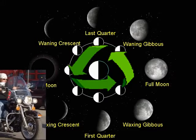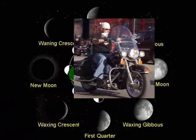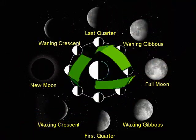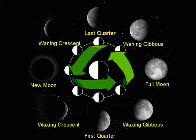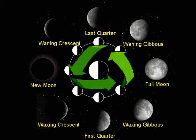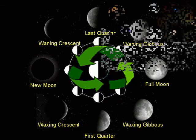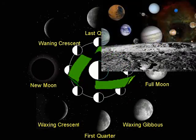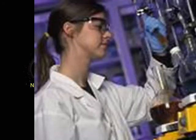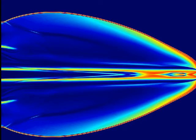Today we're going to study cycles, but not that kind of cycle. We're going to study the type of cycles that occur in science. These cycles are common in Earth science, biology, chemistry, and physics, so you will study a lot of cycles over your lifetime.